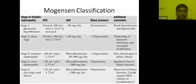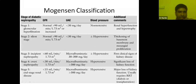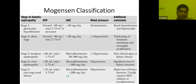Mogensen, in type 1 diabetes, explained the natural history of diabetic kidney disease and classified it into stages. Initially there is glomerular hyperfiltration where GFR, urine albumin, and blood pressure are all normal. Then comes a silent stage where some patients develop mild hypertension. In the incipient stage, GFR starts to decline and microalbuminuria starts to appear. In overt nephropathy, GFR falls again and frank proteinuria develops with hypertension. In end-stage renal disease, the patient becomes uremic and requires renal replacement therapy.